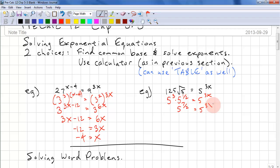This is equal to 5 raised to the power of 3x. We have the same base. We can now equate the exponents. 7 over 2 equals 3x. Therefore, x equals 7 over 6.